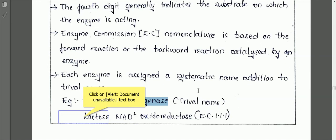The first digit indicates the class — enzymes are classified into different classes, and the first digit indicates which class an enzyme belongs to. The second and third digits indicate the subclass and sub-subclass respectively. The fourth digit indicates the substrate on which that particular enzyme is acting.